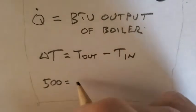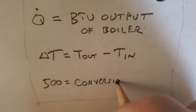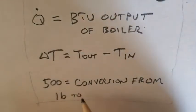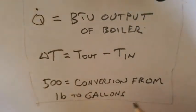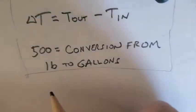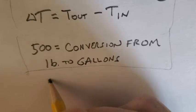And we know what 500 is. It's a conversion. A British thermal unit is the amount of energy it takes to heat one pound of water one degree Fahrenheit. But we're not using pounds on the other side of the equation, so we've got to convert.